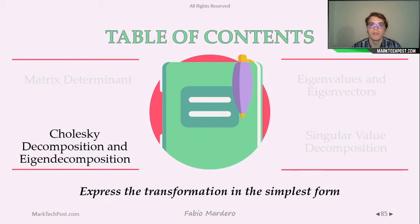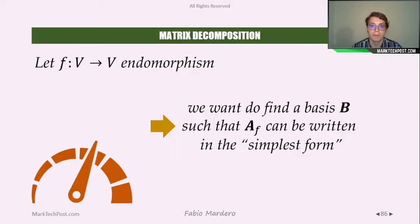In the previous section we defined eigenvalues and eigenvectors as the constants of a linear transformation and we leveraged the determinant as a tool to compute those elements. Now we want to use eigenvalues and eigenvectors to express the transformation matrix in the simplest form — we want to find a basis for our endomorphism such that the transformation matrix can be written in its simplest form.